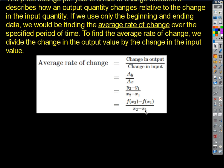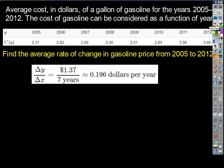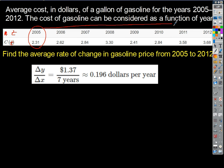So if we want to find the average rate of change in gasoline prices from 2005 to 2012, let's call the input variable t and the function c of t. We're starting in 2005 with that ordered pair and ending in 2012 with that ordered pair. The input is t — the year — and the output is cost. Everybody agree?